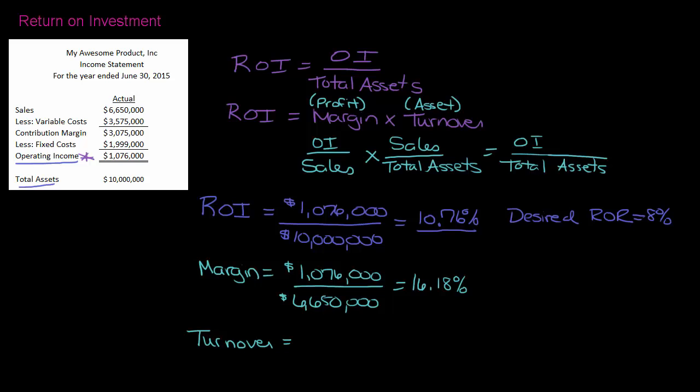Asset turnover is sales over total assets. What this ratio tells you is how efficiently you are using your assets to generate sales. So if I have sales of $6,650,000, and I have $10 million in assets, that means that my assets are turning over into sales 0.67 times. So the higher this number is, the more sales you're generating with your assets.